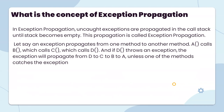Let's say an exception propagates from one method to another. Method A calls B, which calls C, which calls D. If D throws an exception, then the exception will be propagated from D to C, C to B, B to A, unless one of the methods catches the exception.